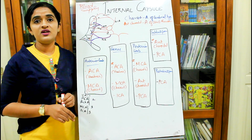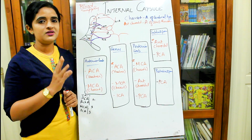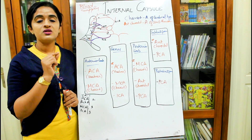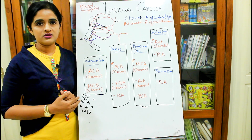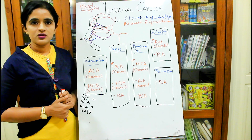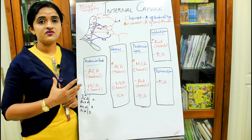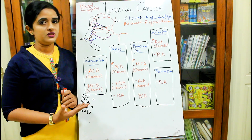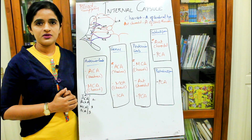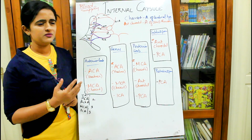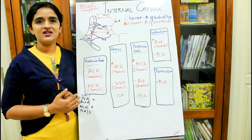Blood supply of the internal capsule is very important because whenever there is a hemorrhage or thrombosis of major vessels supplying the brain, you need to know which regions are supplied by that vessel in order to clinically assess the patient. We know that if there is a very small lesion in the internal capsule, it is going to affect a major portion of the opposite half of the body. We will see how the blood vessels supply the internal capsule — there are many versions and it's a bit confusing, but I've tried my best to make it easier.